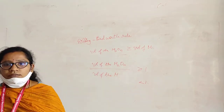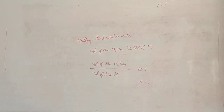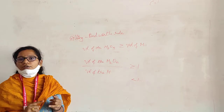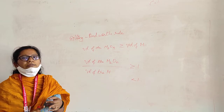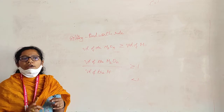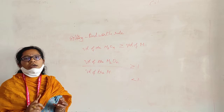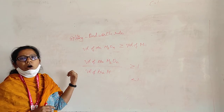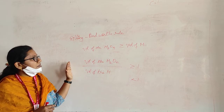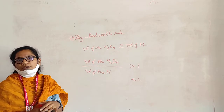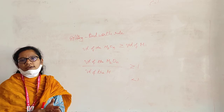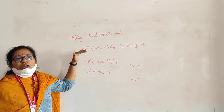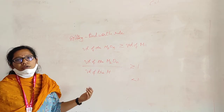Thank you for today. To recap: today we learned about what corrosion is, the two theories of corrosion — dry corrosion and wet corrosion — and under dry corrosion we saw three types: oxidative corrosion, corrosion by other gases, and liquid metal corrosion. Within oxidative corrosion, we have four types of oxidation layers being formed, and we discussed which type of layer is protective. The Pilling-Bedworth rule is very important to know whether the oxidative layer is protective or not.